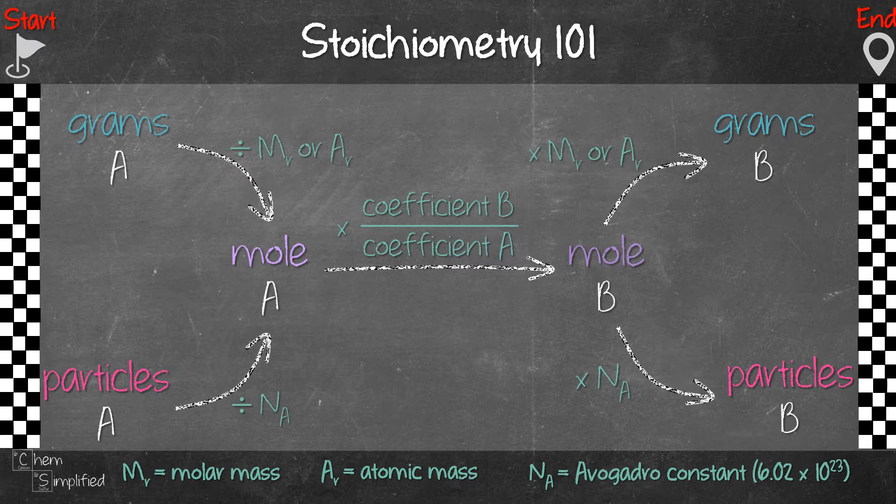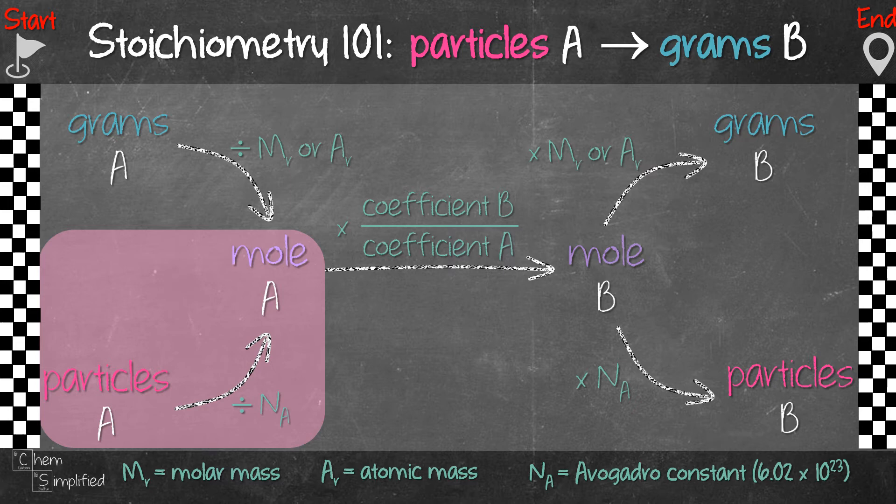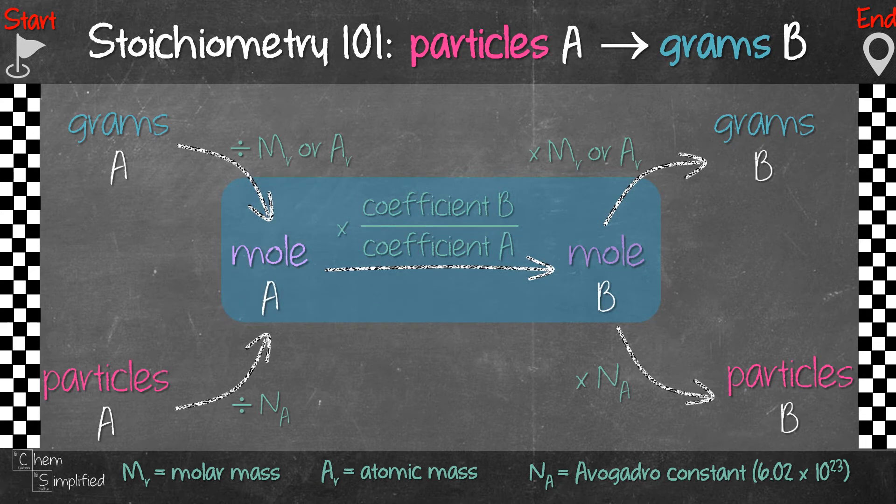So let's go through an example. The question gives particles of A and wants us to find grams of B. So this is the entire plan. We have to figure out what is it that we want to use, like which pathway we want to use. We are given particles of A. So we start with particles of A and we will find the moles of A. And we do that by dividing with the Avogadro's number. And once we found the mole of A, we can go ahead and find moles of B. And we do that by using the mole ratio of the balanced equation.